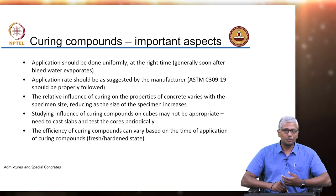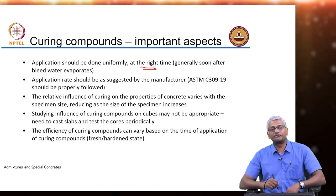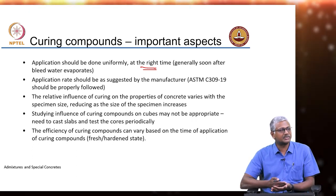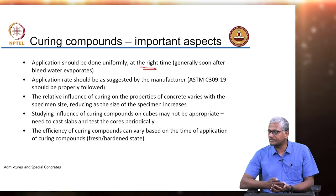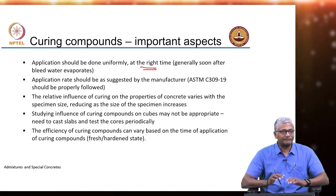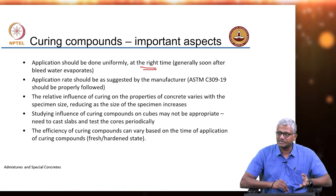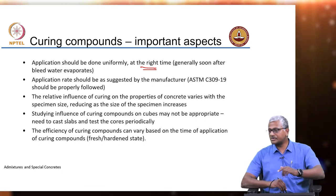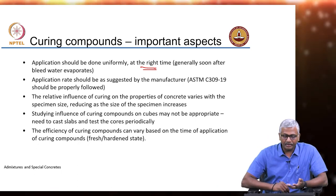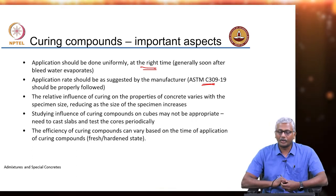If the concrete has a surface sheen of bleed water, your curing compound is not going to be effective. It needs to have almost a drying surface — not a completely bone-dry surface, but a drying surface. The bleed water has to evaporate and then you apply your curing compound on top, and it will stick to the surface well. Application rate has to be as per the suggestion of the manufacturer, sometimes in not just one coat but several coats of the curing compound. There are guidelines in ASTM C 309 which need to be properly followed while applying these curing compounds.